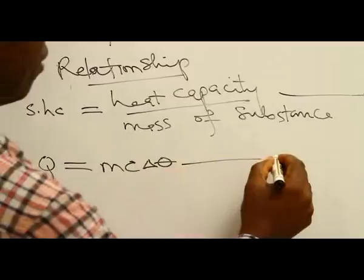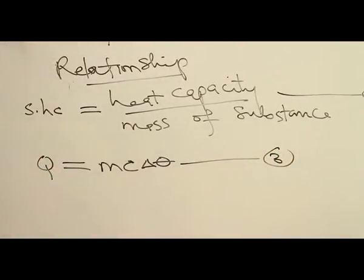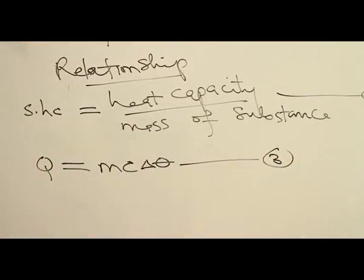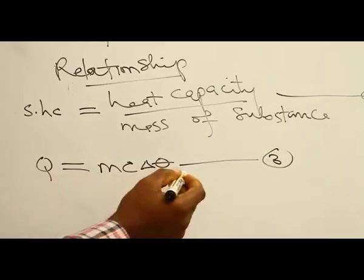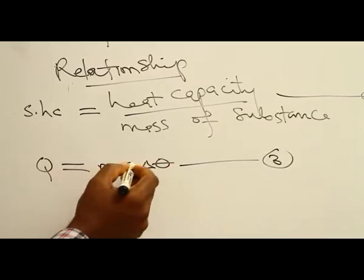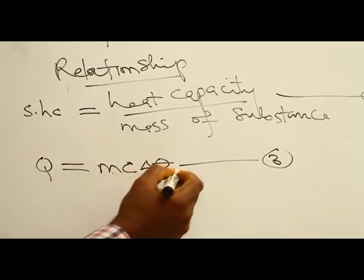This formula is very important because it helps us to know the amount of heat energy that entered into a body or came out of a body for a body that is receiving heat absorbed with temperature increase. To know the amount of heat energy we use this formula: the mass of the substance times the specific heat capacity times the change in temperature.